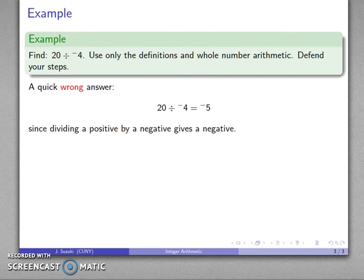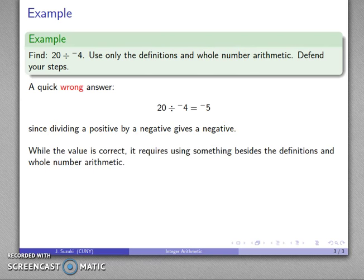Let's take a look at a quick wrong answer. 20 divided by negative 4 equals negative 5 because dividing a positive by a negative gives a negative. And here's our defense of our step, but it's not a definition. And it's certainly nothing to do with whole number arithmetic. So the value may be correct, but it's not the correct answer because it's answering a different question.